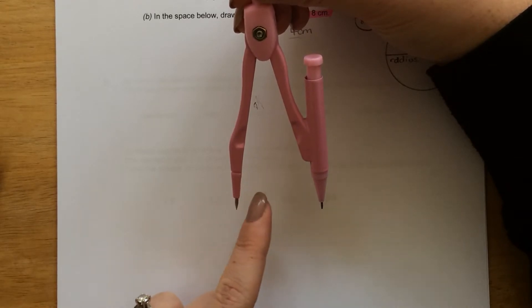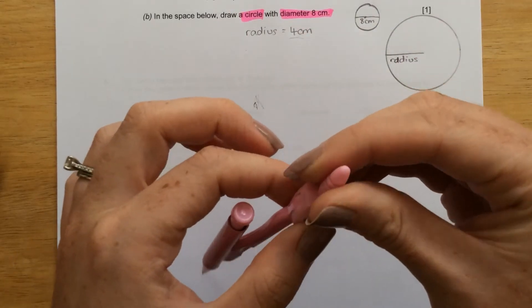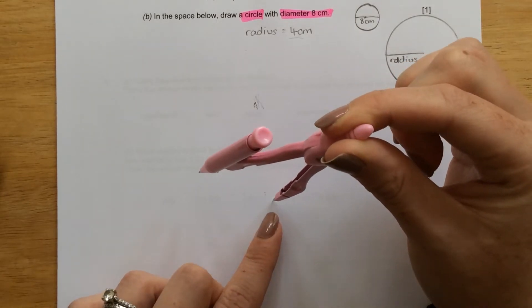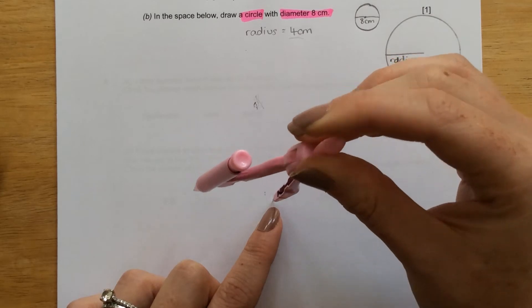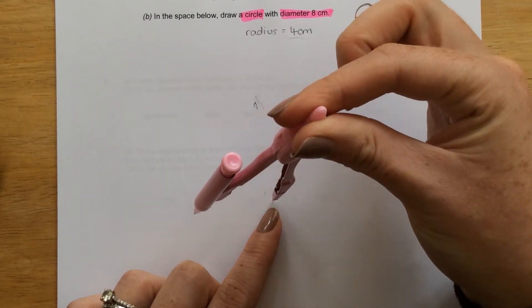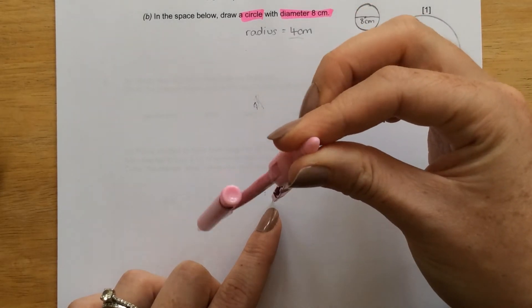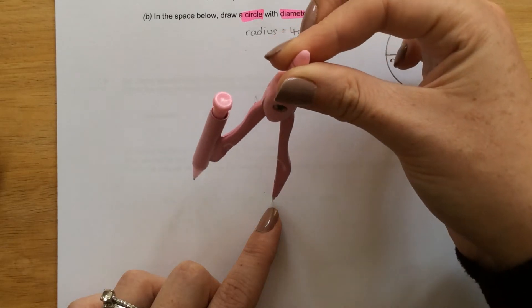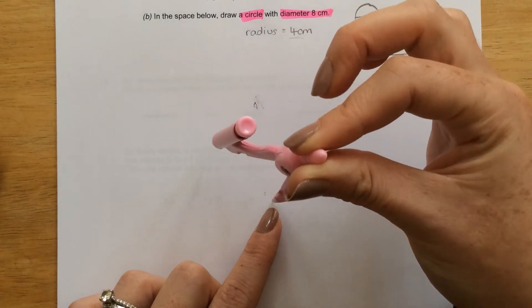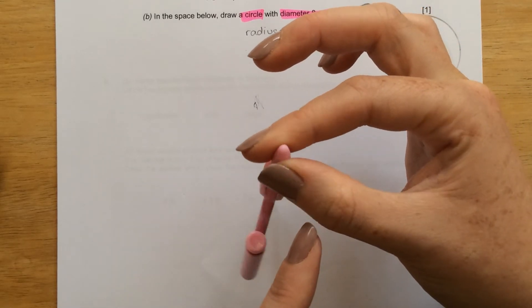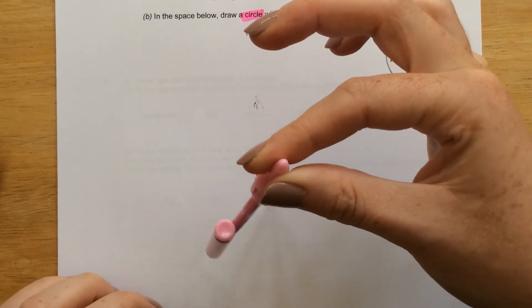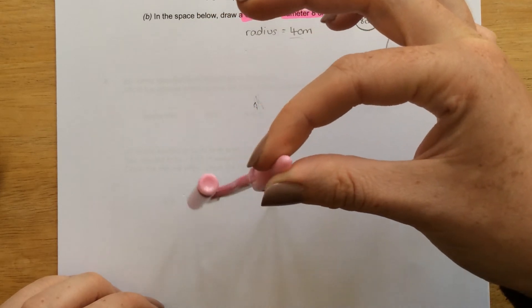So, I'm going to put my point on the centre of the page, that's going to be the centre of my circle, and I'm going to hold the compass with these two fingers here. What I'm going to do, I'm going to roll the top of the compass through my fingers, and that turns it so that I can then draw my circle.